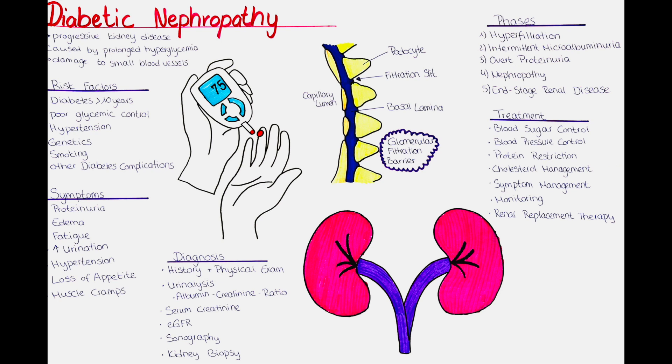Elevated levels of serum creatinine may suggest impaired kidney function. We can also estimate the glomerular filtration rate. By using the serum creatinine level, the age, gender and other factors, the eGFR is calculated to estimate the kidney's filtering capacity. A lower eGFR indicates reduced kidney function. We also usually obtain a sonographic image of the kidneys. Indicators for diabetic nephropathy are nephromegaly, so a larger-than-normal kidney, a renal parenchyma that appears thickened with a diameter of around 2–2.5 cm, and increased echogenicity of the parenchyma.